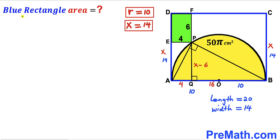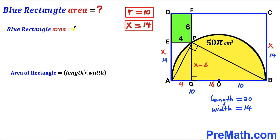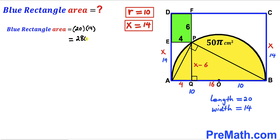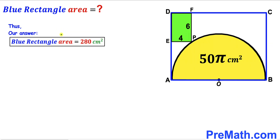For the final step, we calculate the area of blue rectangle ABCD. Using the formula: Area = length × width = 20 × 14 = 280 cm². So the area of the blue rectangle is 280 cm². That's our final answer. Thanks for watching and please subscribe for more exciting videos!